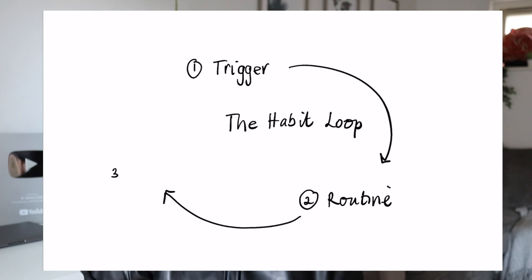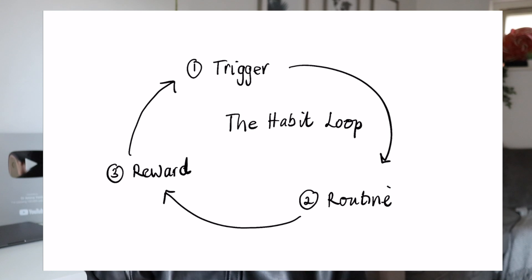Thirdly, there's a reward — whatever you've gained from performing that complete loop. It could be satisfaction, knowledge, or money. For example, if your routine is going for a jog, your reward might be checking your smartwatch to see how many calories you've burned, or allowing yourself to eat a certain thing after your workout. But whatever it is, there's always that kind of loop.